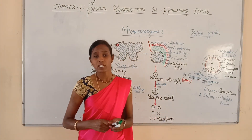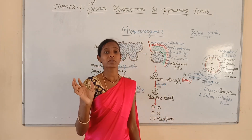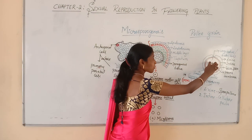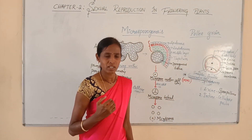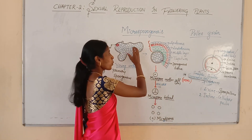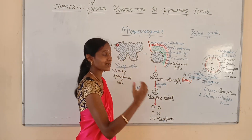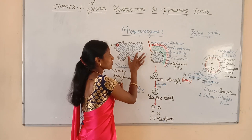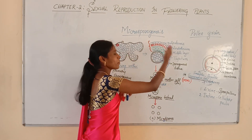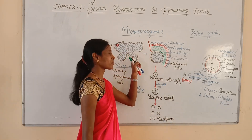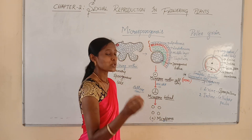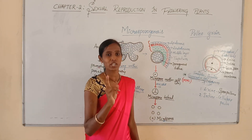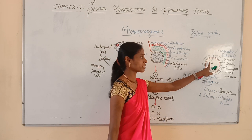In most angiosperms — about 60% of angiosperms — the pollen grains will be shed at the two-cell stage, meaning they contain a vegetative cell and a generative cell. The shedding of pollen grains takes place when the anther gets matured and undergoes contraction, causing rupturing, and whatever pollen grains are present come out — this is called dehiscence of the anther, leading to the release of pollen grains.